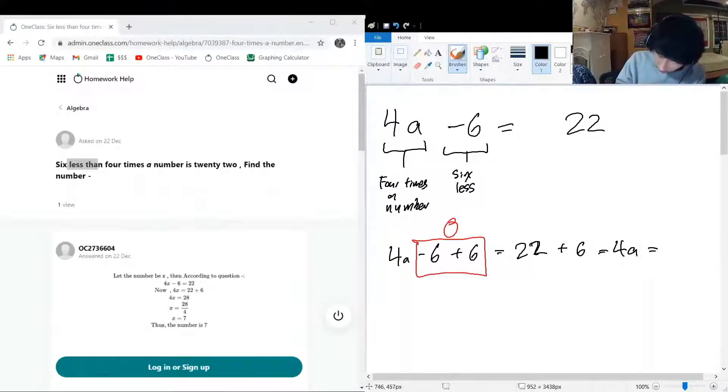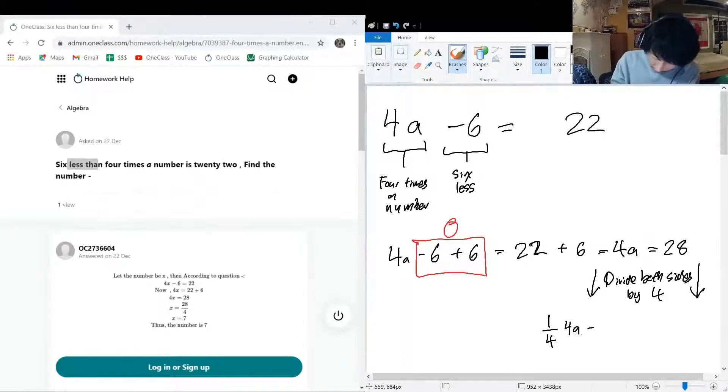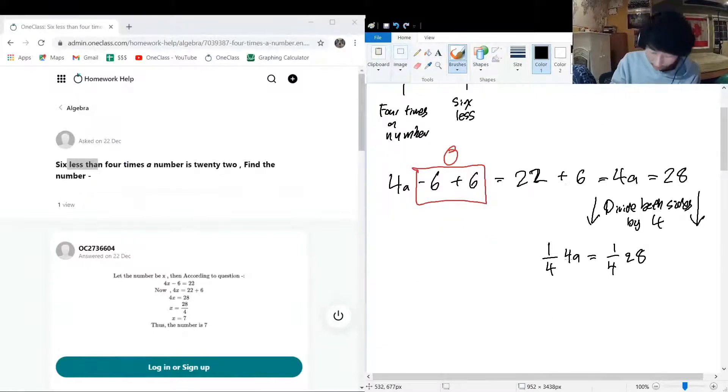Now let's divide both sides by four. And we will get this, so we'll have one quarter of 4a is equal to one quarter of 28. And as you can see here, the four on the denominator and the times four, they neutralize each other and we'll just have a on this side.